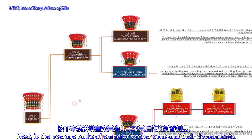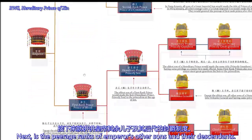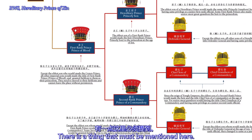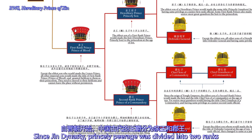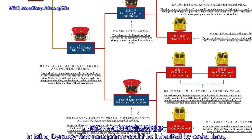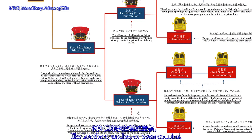Next is the princely ranks of the Emperor's other sons and their descendants. There is one thing that must be mentioned here. Since the Jin Dynasty, princely peerage was divided into two ranks: Prince of Blood and Prince of Commandery. In Ming Dynasty, first-ranked princes could be inherited by cadet lines like brothers, uncles, or even cousins.